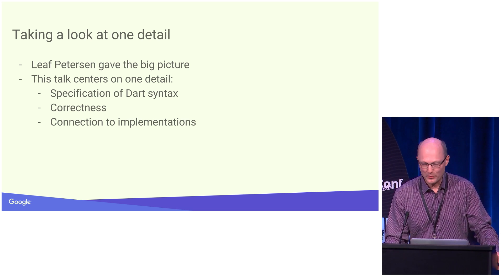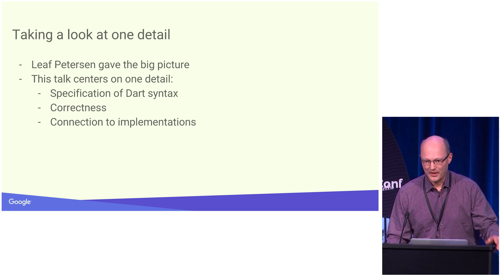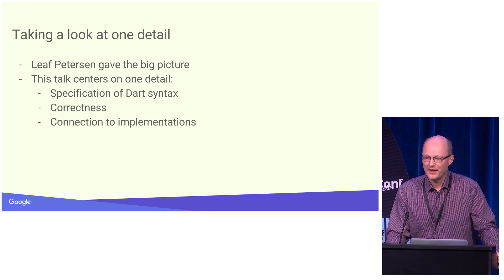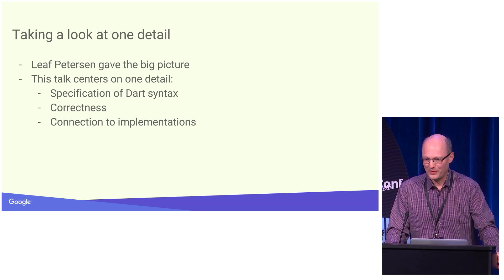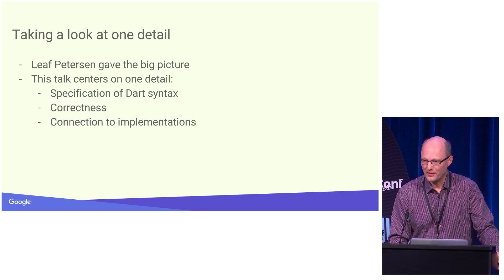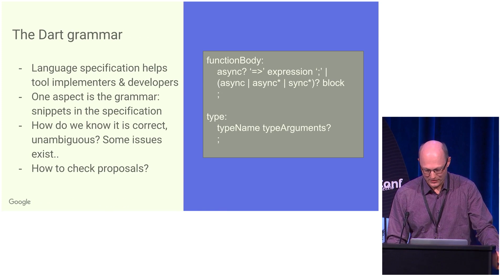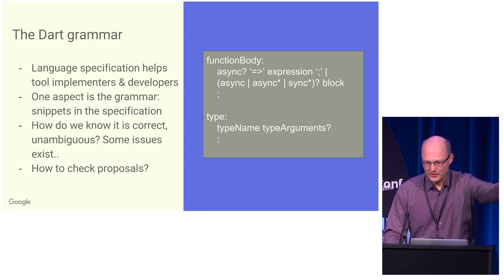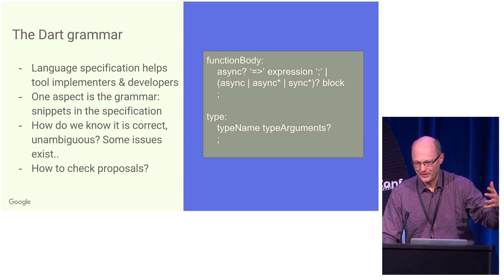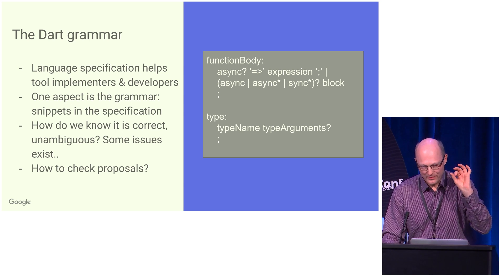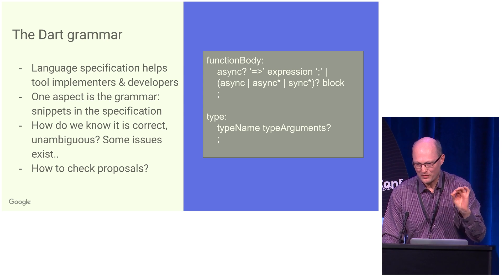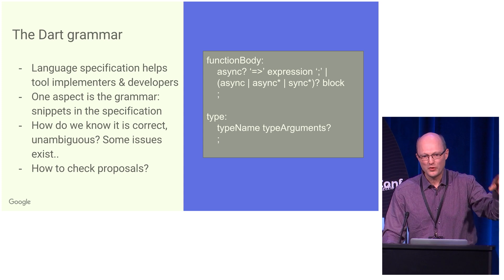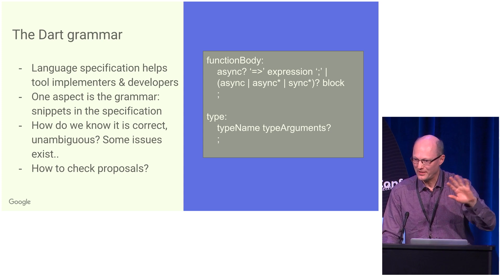But one element in the language specification that is difficult to get an overview of is the specification of the grammar. We have snippets all over the specification, and some of these snippets have issues that we knew about. For instance, there were places where metadata could be placed in two locations in a declaration that was clearly not intended.